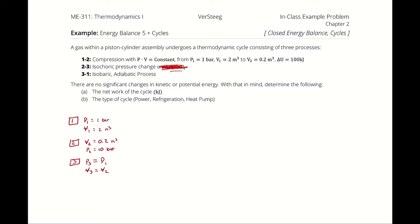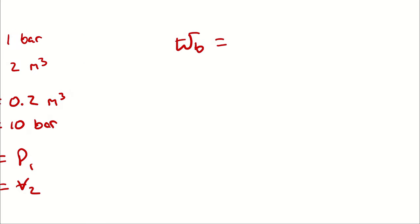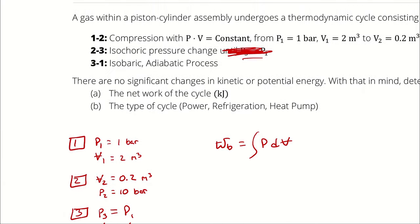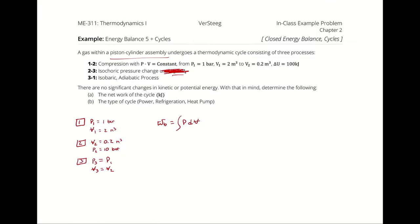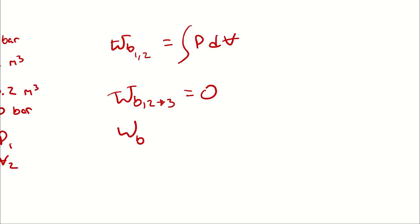What I care about here is boundary work. The boundary work is the integral of pressure with respect to volume — that's the work associated with a piston-cylinder assembly as the volume changes. From 1 to 2 we have compression (volume goes from 2 to 0.2 cubic meters). The volume doesn't change from 2 to 3, and then it expands from 3 to 1. So I'll have boundary work from 1 to 2, no boundary work from 2 to 3, and boundary work again from 3 to 1.